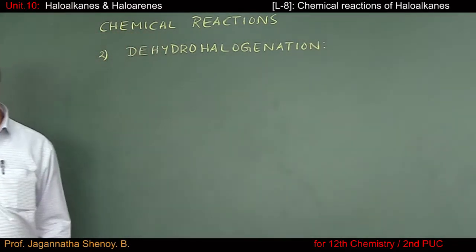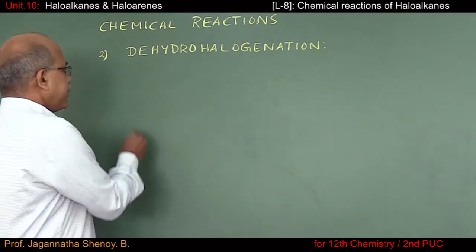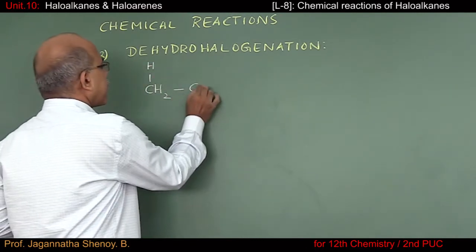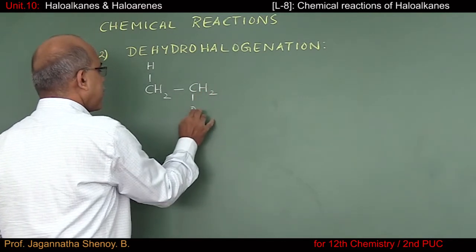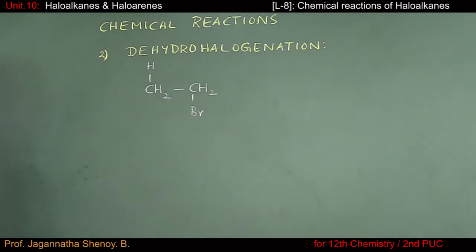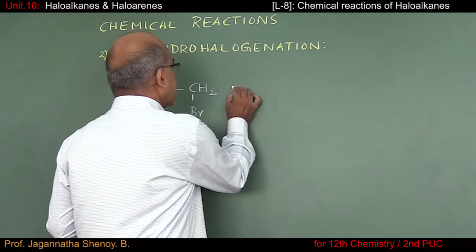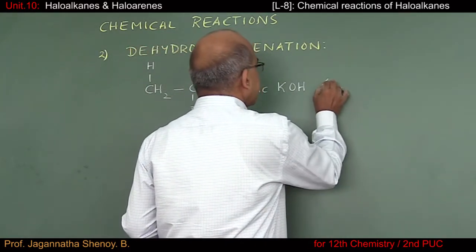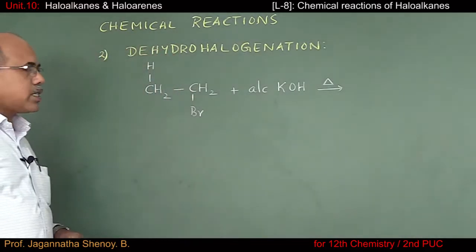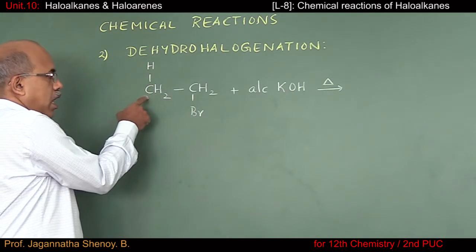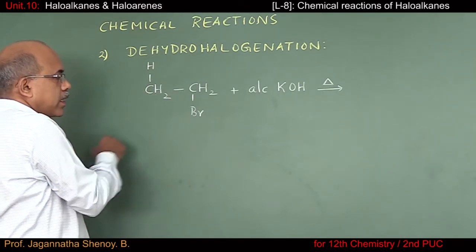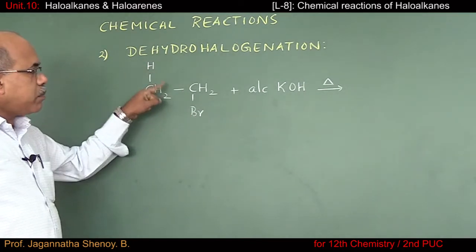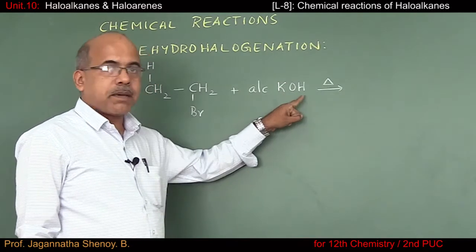To understand this reaction I will consider the example of ethyl bromide. I am going to make use of alcoholic KOH as the reagent, and I need to heat it. During this reaction, hydrogen will go from the beta carbon atom and halogen will go from the alpha carbon atom.